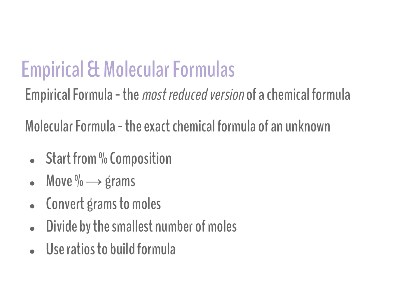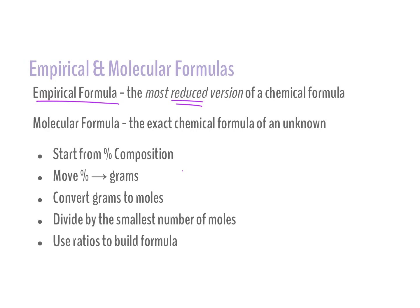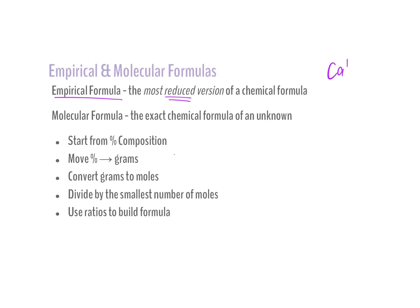In these topics, we have two types of formulas: empirical formulas and molecular formulas. Empirical formulas are the most reduced version of a chemical formula. Any ionic compound that we build is automatically an empirical formula because we reduce it down. For example, if I had calcium sulfate and cross-multiplied, I'd get CA2SO42, but that's not its empirical formula. Its empirical formula is CaSO4 — the most reduced version of those two ions coming together.